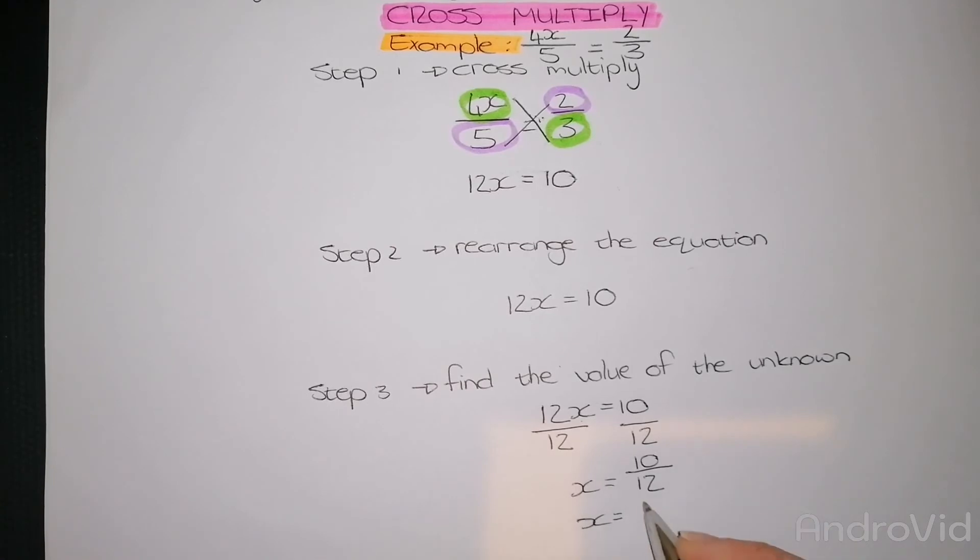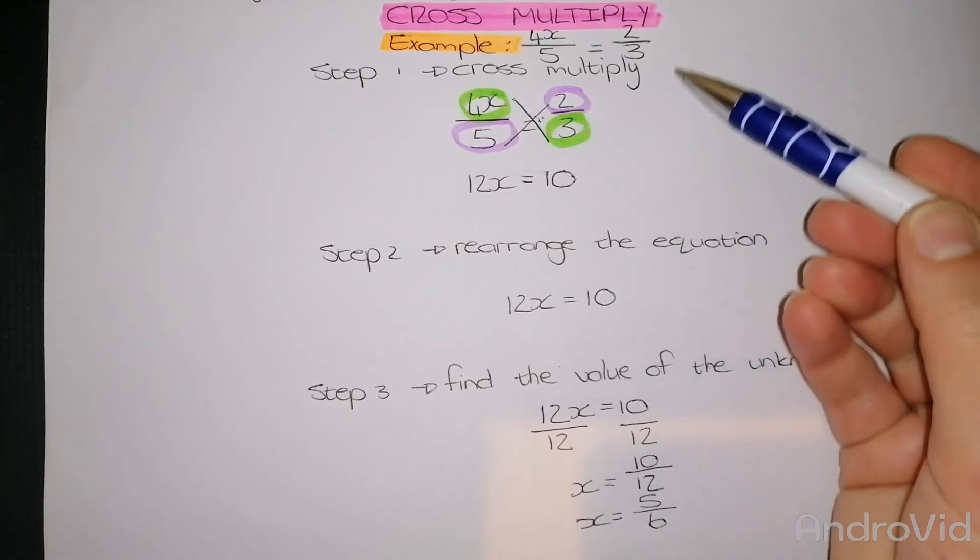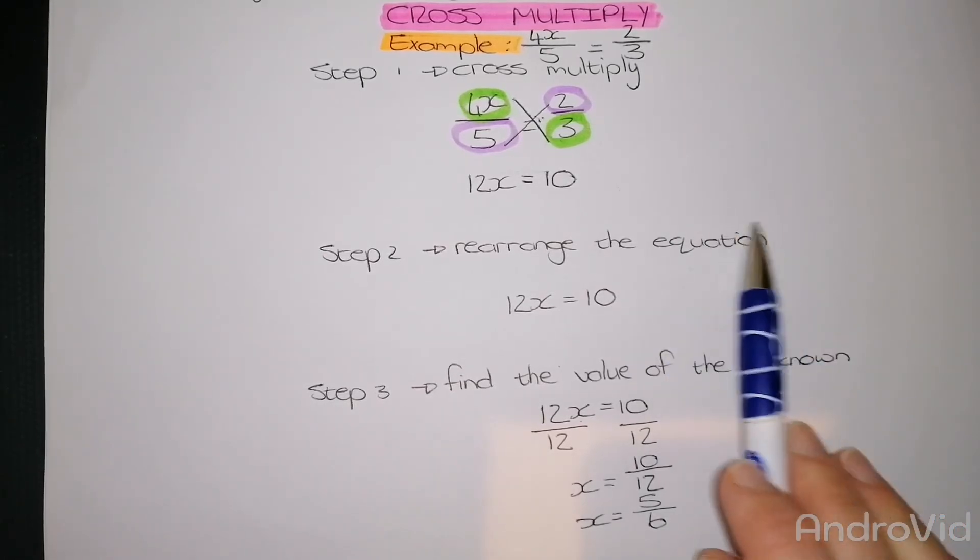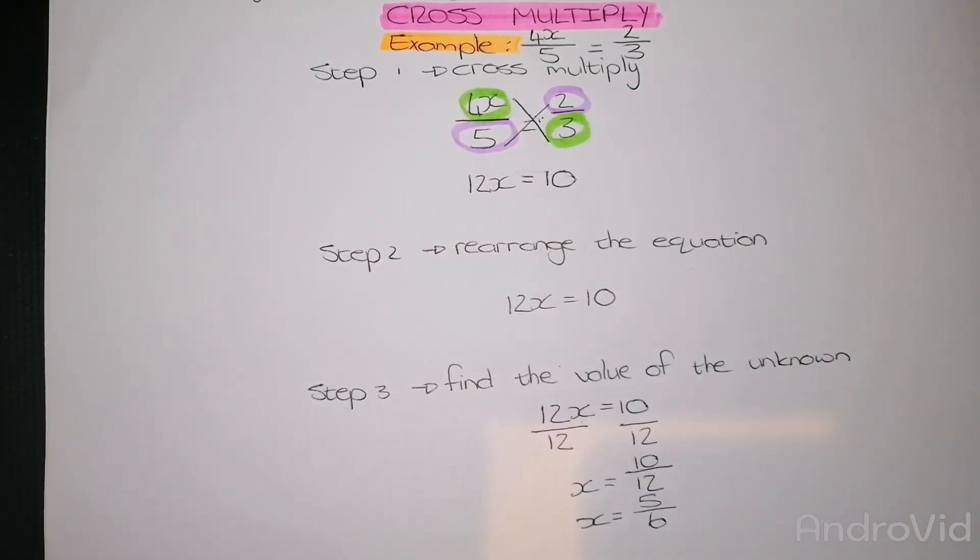When I rewrite it, my simplified answer will be 5 over 6. And that is how you cross multiply by following these three simple steps: cross-multiplying, rearranging, and then finding the value.